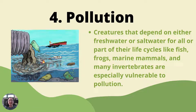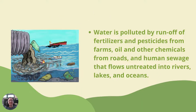Pollution is also a major cause of extinction. Creatures that depend on fresh water or salt water for all or part of their life cycles — like fish, frogs, marine mammals, and many invertebrates — are especially vulnerable to pollution. Water is polluted by runoff of fertilizers and pesticides from farms, oil and other chemicals from roads, and human sewage that flows untreated into rivers, lakes, and oceans.